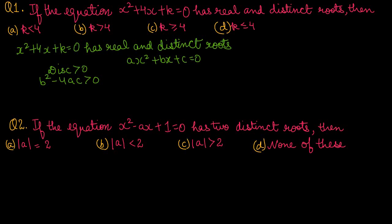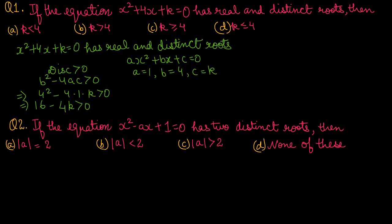If we compare the given quadratic equation with ax² + bx + c, then a = 1, b = 4, and c = k. Placing the values: 4² - 4(1)(k) > 0, so 16 - 4k > 0. Taking 4k to the right-hand side: 16 > 4k, which gives k < 4.